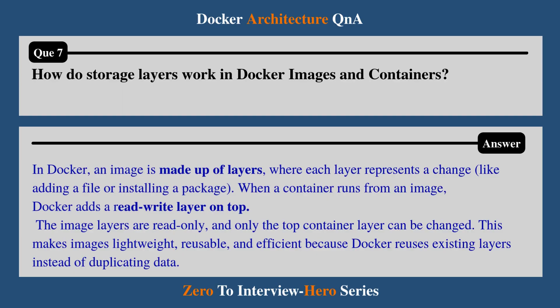Question 7: How do storage layers work in Docker images and containers? In Docker, an image is made of layers where each layer represents a change, like adding a file or installing a package. When a container runs from an image, Docker adds a read-write layer on top. The image layers are read-only and only the top layer — the container layer — can be changed. This makes images lightweight, reusable, and efficient because Docker reuses existing layers instead of duplicating data.